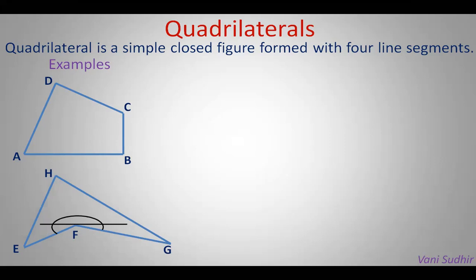So a quadrilateral is mainly classified into two types: convex and concave. If all angle measures are less than 180 degrees, it is convex. If at least one angle measure is more than 180 degrees, then it is concave.